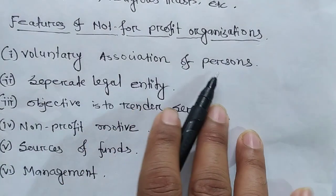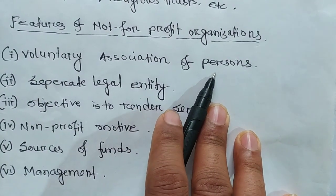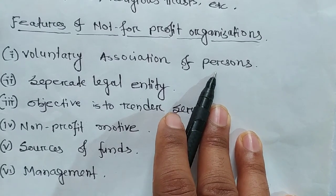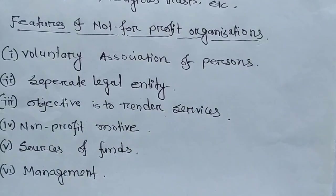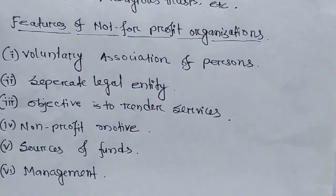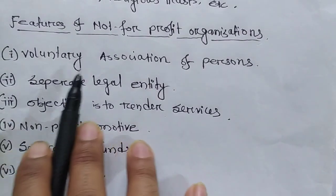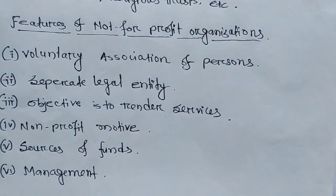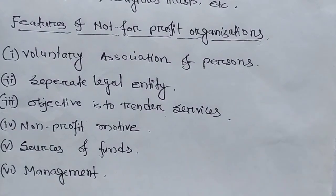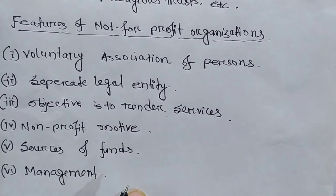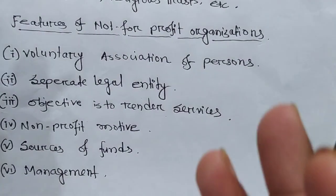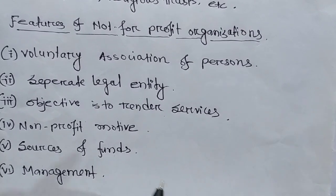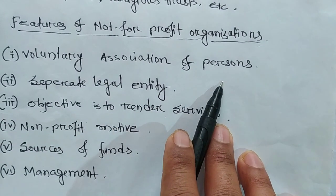The first important feature of Not-for-Profit Seeking Organizations is that it is a voluntary association of persons. This means that two or more persons come together willingly — voluntarily — and form the organization. No one is forced to join. All the members come together willingly and form the organization.